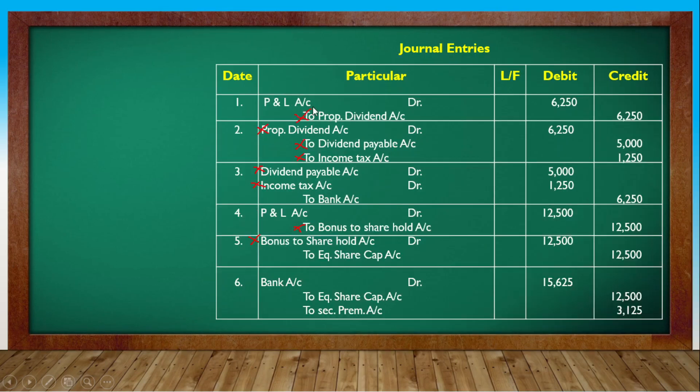Now for the balance sheet: P&L account, Bank account, Equity Share Capital. The atlas accounts show plus and minus adjustments. The balance sheet is now clear with debit and credit entries accounted for.